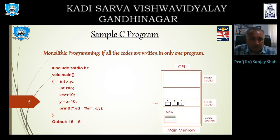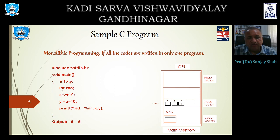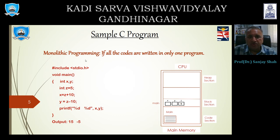Here all the processing is done in only one function, that is main. This program is also called a function. The main function contains all the instructions we want to perform. When all the code is written only in one function it is called monolithic programming.